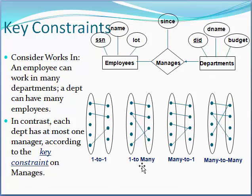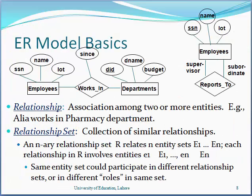The fourth relationship type is many-to-many. This type of relationship is used when for each instance in the first entity class there can be many instances in the second entity class, and vice versa. For example, a student studies many courses, many employees learn many skills, and many readers read many books. These are all examples of many-to-many relationships.